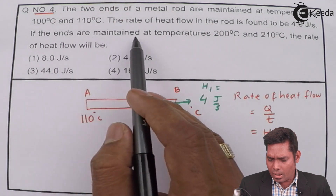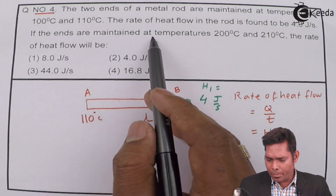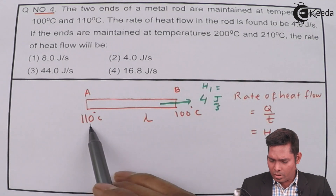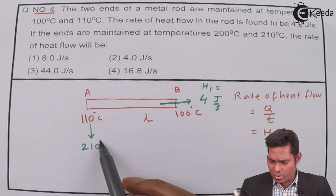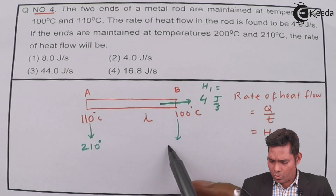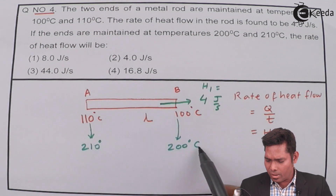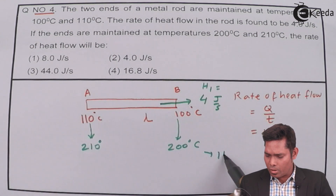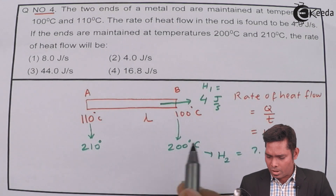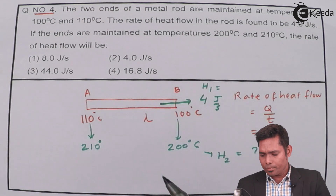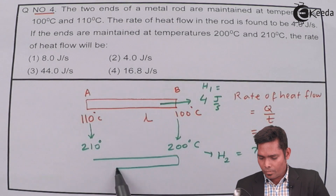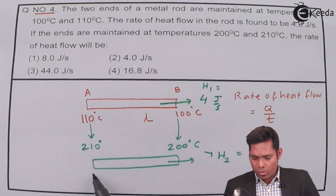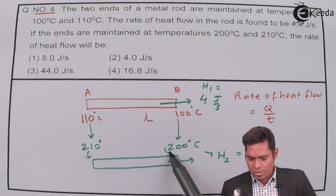If the ends of the rod are maintained at temperatures 200 and 210 degrees centigrade — so now this end is changed to 210 degrees centigrade and this end is changed to 200 degrees centigrade — then what is the rate of heat flow H2 in this situation? How much heat will flow?